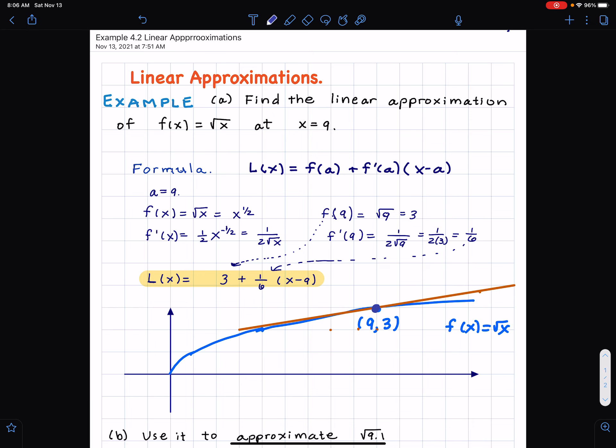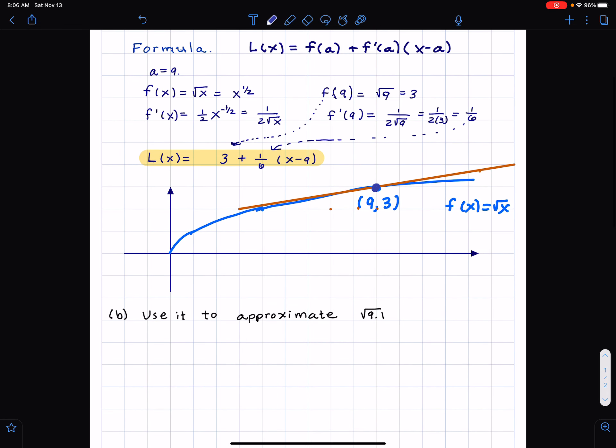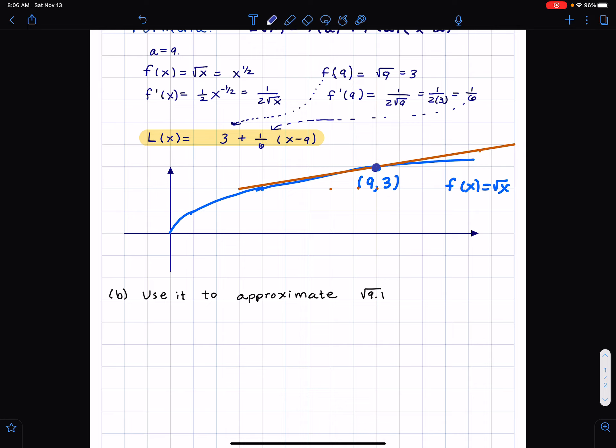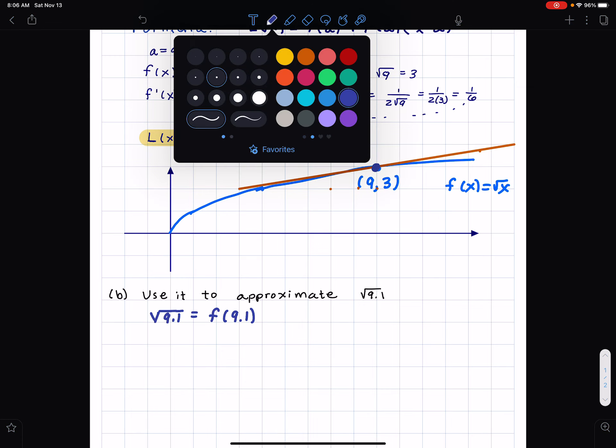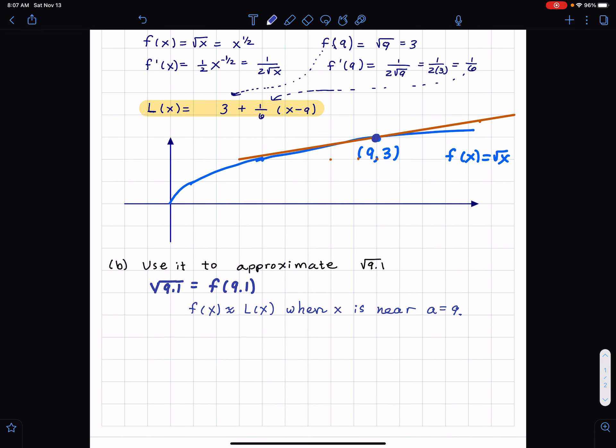Now, what we're going to do is go on to the next part, which I didn't show you before, but it's part b, use it to approximate the square root of 9.1. You know, this is very much theory, and we have a calculator, can't you just do that? Yeah, well, could do that maybe. But let's do it the way we're supposed to do this. So first of all, the square root of 9.1 is, well, that's f of 9.1.